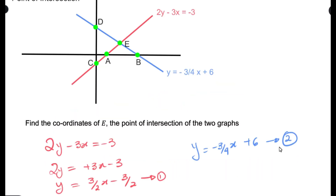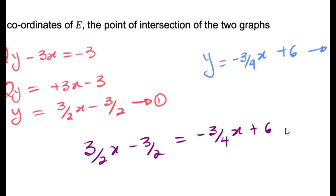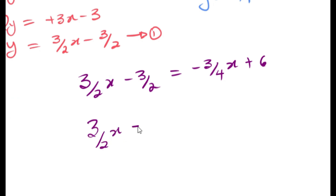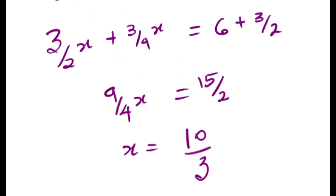The blue straight line equation I will take as equation two. We have Y equals 3/2 X minus 3/2 for the first equation, and Y equals negative 3/4 X plus 6 for the second equation. Since both are in terms of Y, we can equate both equations. We then simplify to find the X coordinate.